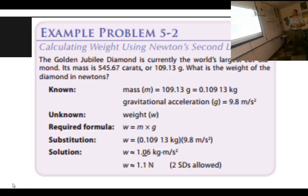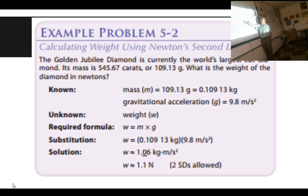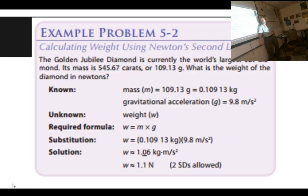We need to correct for significant digits. We were given five significant digits for the mass, but our acceleration of gravity was only given to two significant digits — 9.8. So we must answer in two significant digits: 1.1 newtons.